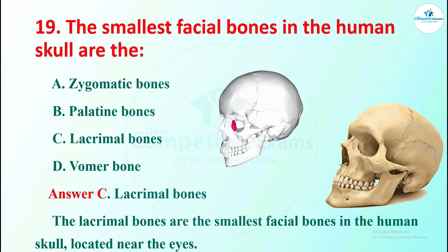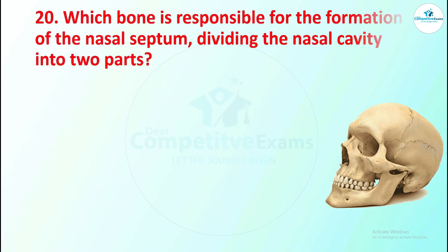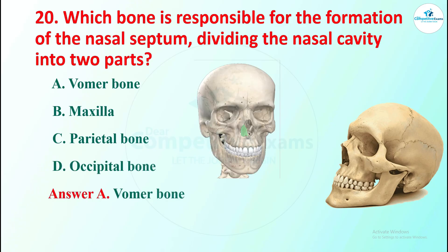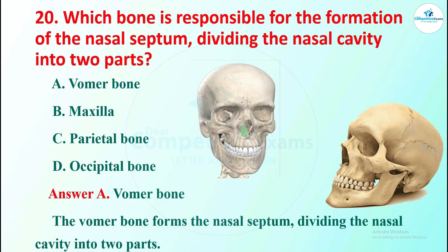Question 20: which bone is responsible for the formation of the nasal septum, dividing the nasal cavity into two parts? Options are vomer bone, maxilla, parietal bone, or occipital bone. The right answer is vomer bone. The vomer bone forms the nasal septum, dividing the nasal cavity into two parts.